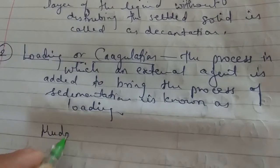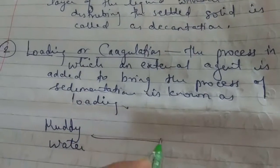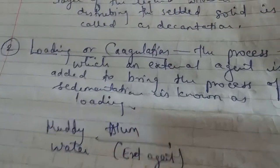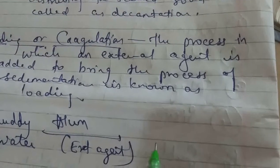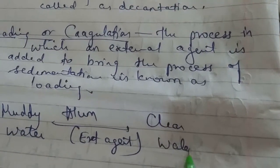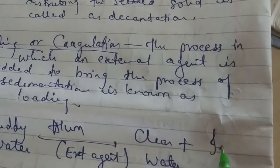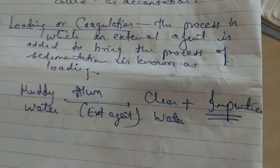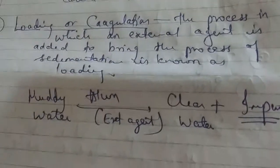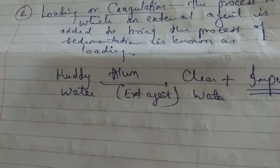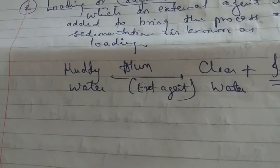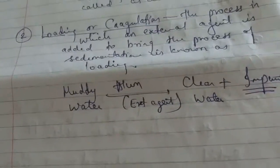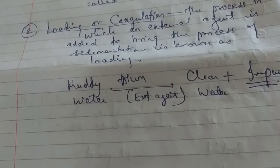For example, if you have muddy water, add alum — that is your external agent. Then you will get clear water and some impurity will settle down at the bottom. At home, when muddy water comes from the taps during rainy season, your mother will use alum and keep the water without disturbance for one or two days, so all the impurity settles down at the bottom.